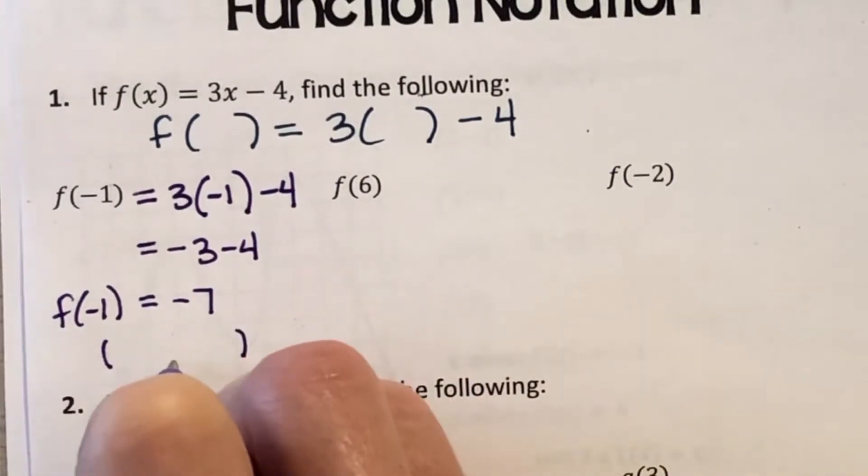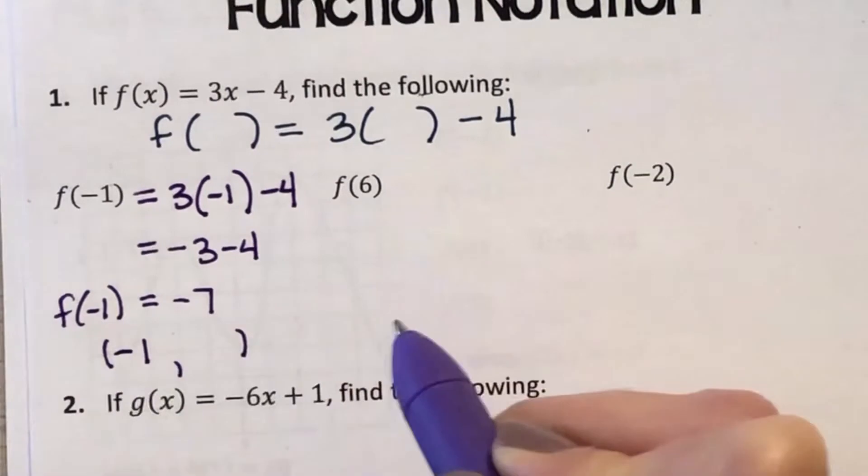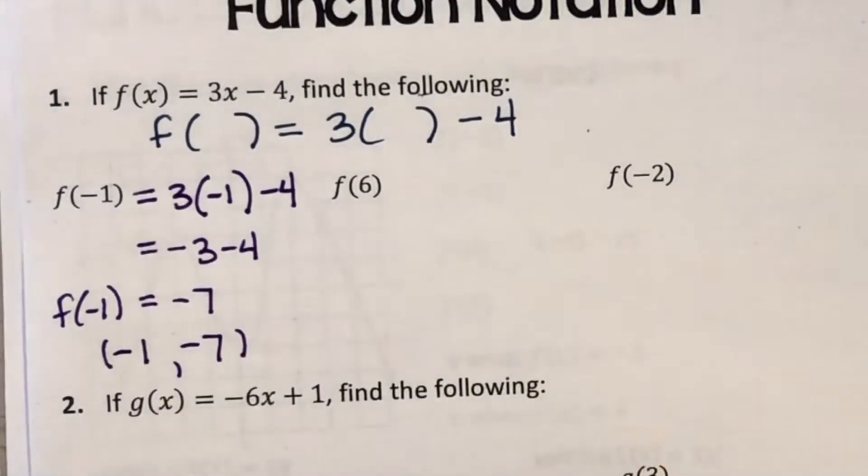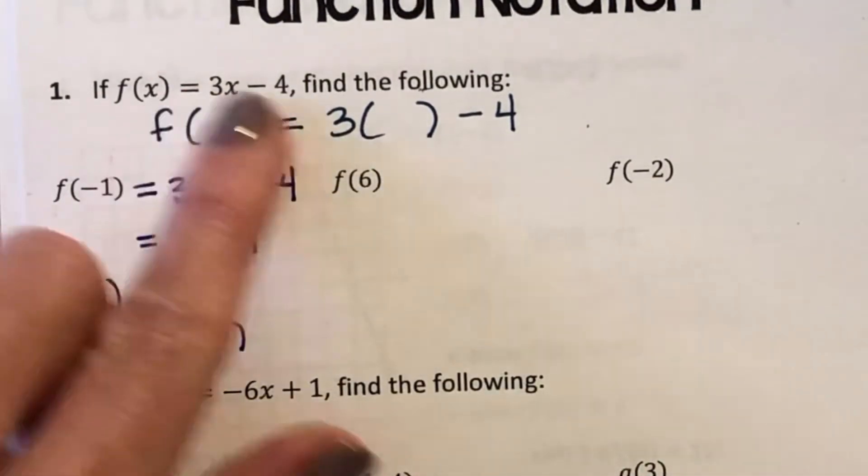We know we have an x and a y point. My x is my domain, my input, and that's a negative 1. And what comes out as a result? Negative 7. So I know the point negative 1, negative 7 follows this rule.